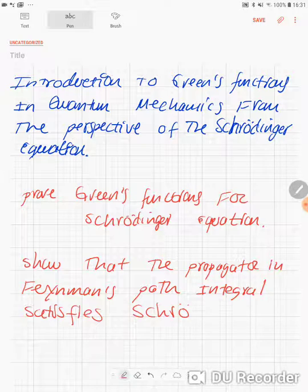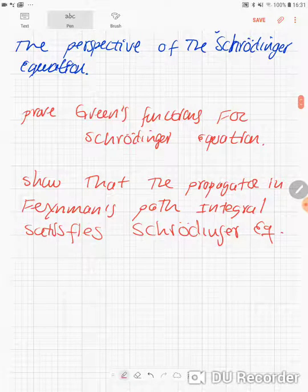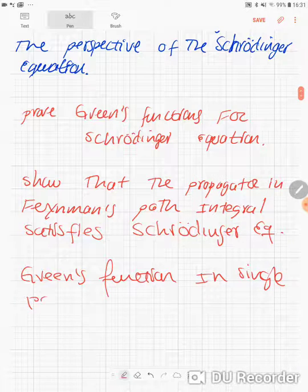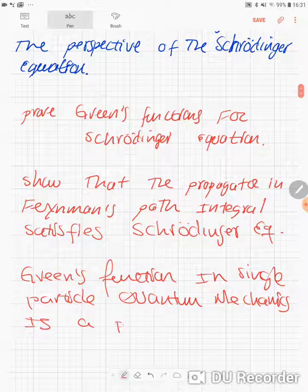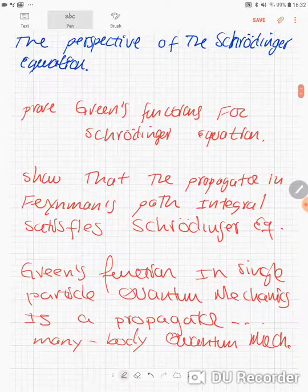satisfies Schrödinger equation. So once we have done this, we can say that the Green's function in single particle quantum mechanics is a propagator, and this of course applies to many-body quantum mechanics as well.